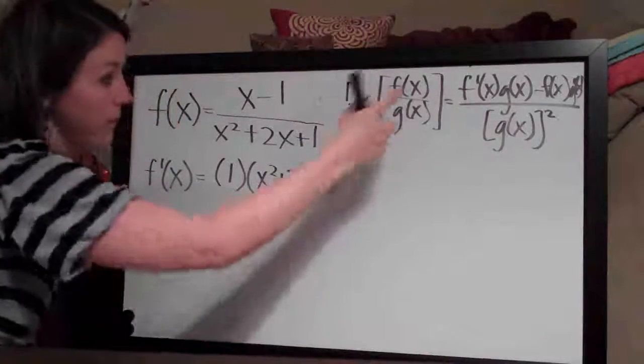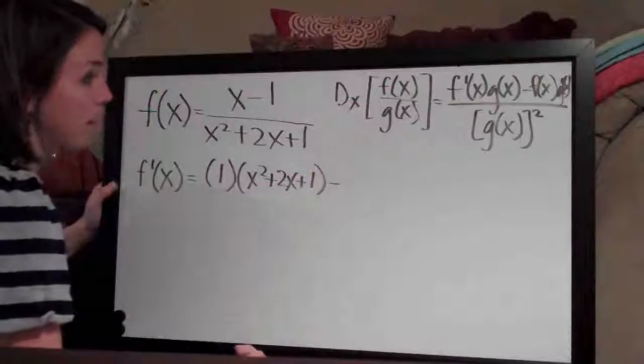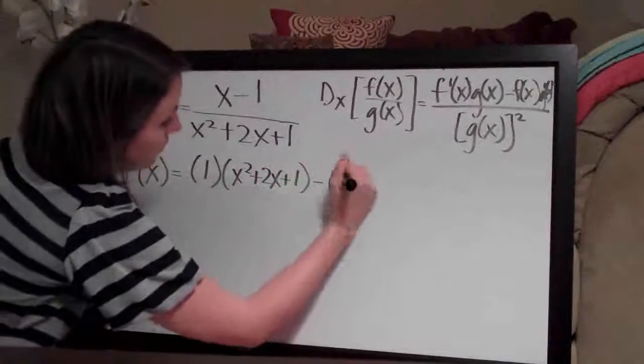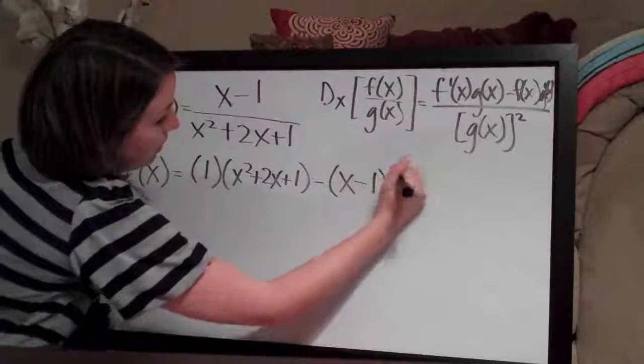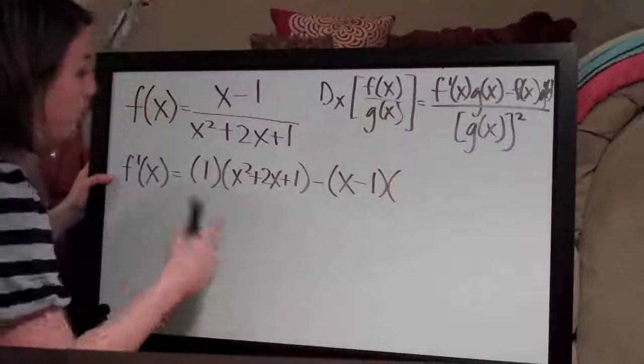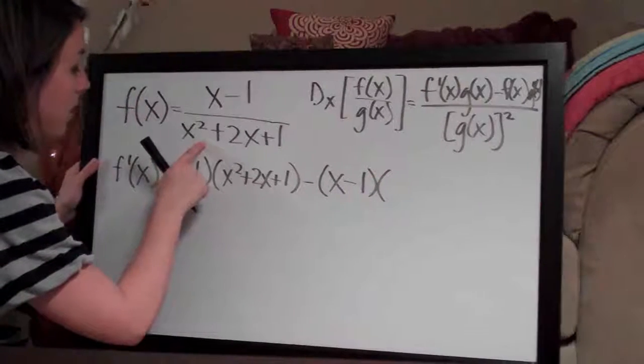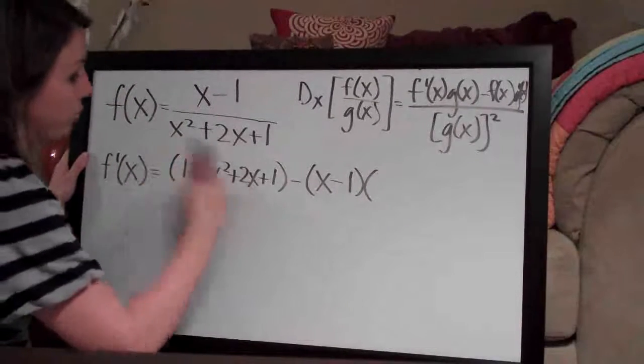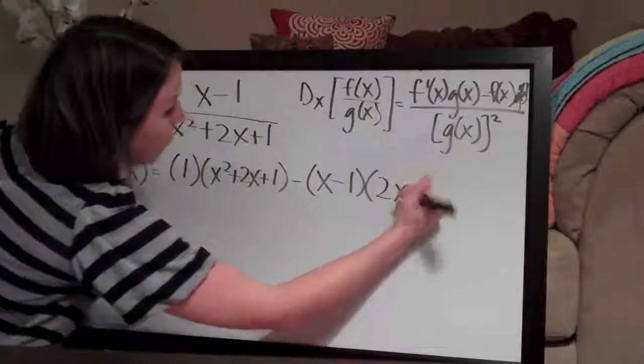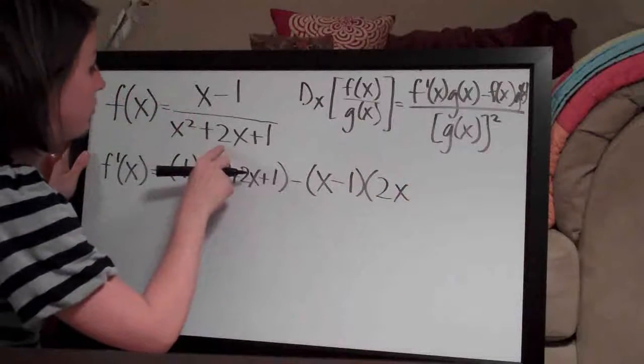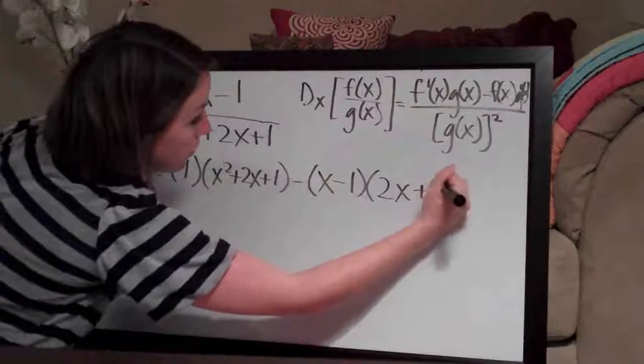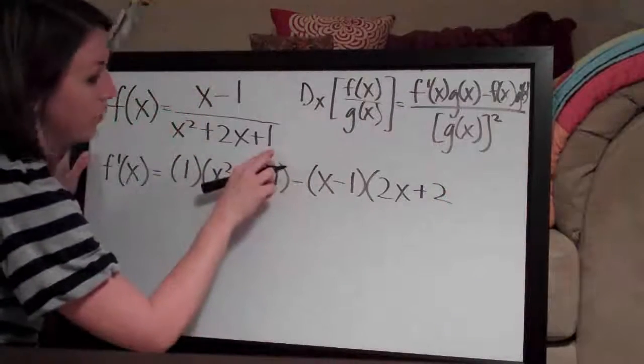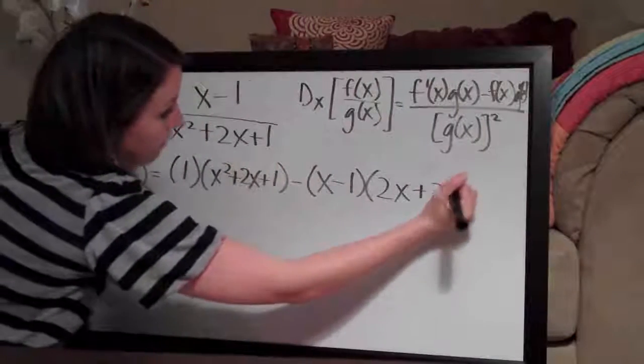minus the top times the derivative of the bottom. The derivative of x² is 2x and the derivative of 2x is 2, so 2x+2. The 1 goes away because it's a constant, so that's the derivative of the bottom.